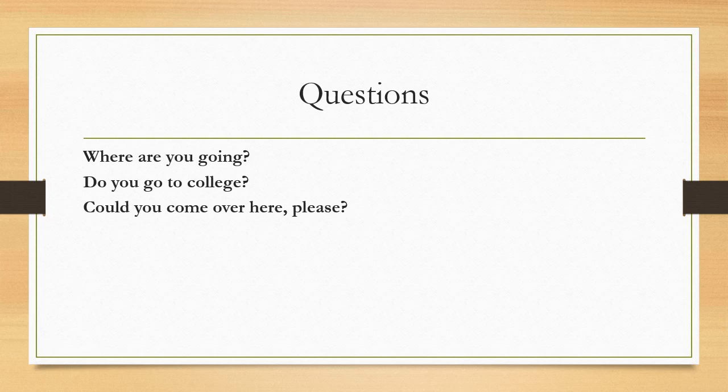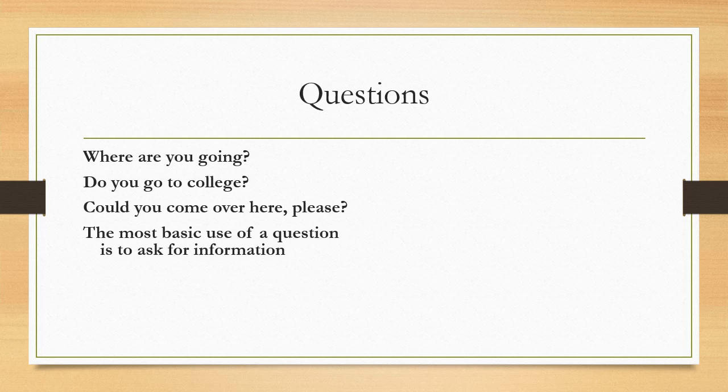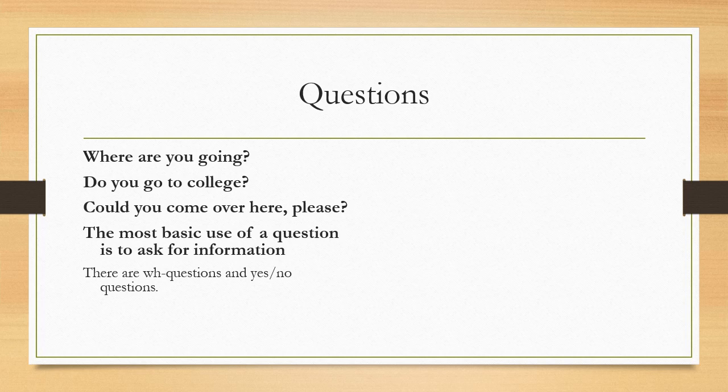Now let's come to the second category of types of sentences, that is questions. Observe these questions: Where are you going? Do you go to college? Could you come over here, please? The most basic use of a question is to ask for information. Questions can be of two types. There are questions formed using the WH words like what, where, when, which, how. And then you can also form questions using the helping verbs, which are also called yes or no questions.